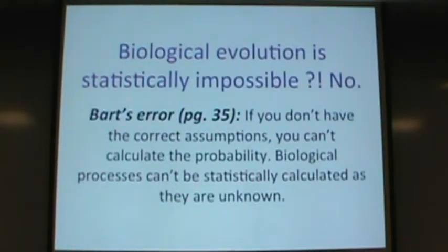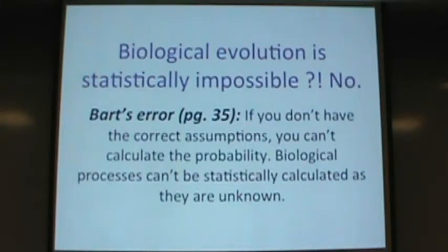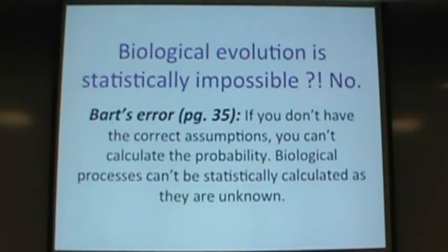My point is: you cannot calculate the probability of something if you don't know the process. For example, if I have a deck of cards and ask 'what are the odds of pulling out an ace of hearts?' — somebody might say one in 52. That's fine if it's a standard deck, but if you don't know whether it's a standard deck, you can't know the odds. It could be 0% or 100%. Until you know how the process happens, you cannot calculate statistical probability. I've seen this mistake on both sides — one side saying life from non-life is statistically impossible, the other saying it's possible. Until you know the process, calculating any probability is bogus.